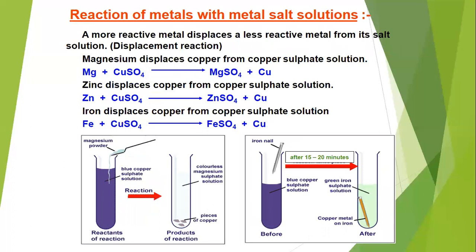A displacement reaction is when a metal is added to another metal's salt solution and we observe the change. For example, with copper sulphate solution — which is blue in colour — if we add magnesium or iron, because both are more reactive than copper, they will easily displace copper from copper sulphate solution and form their own salt solution.